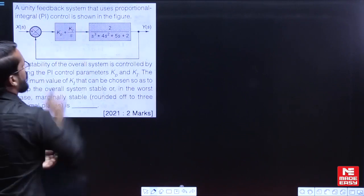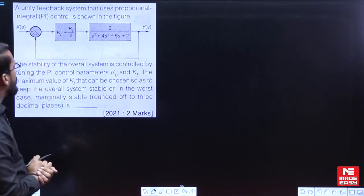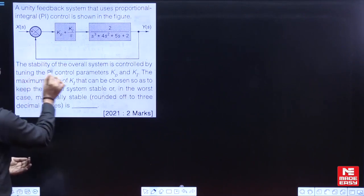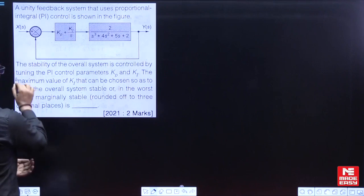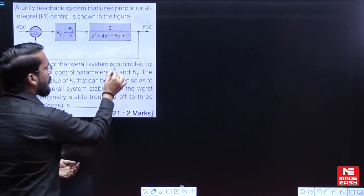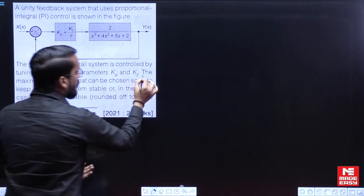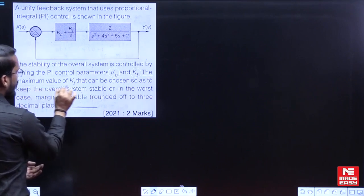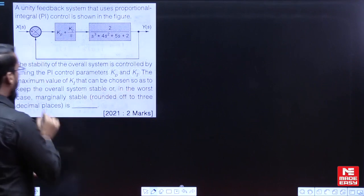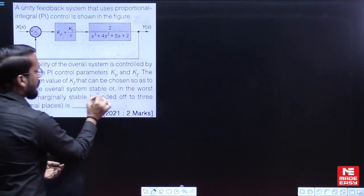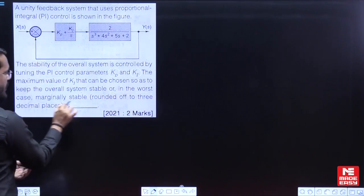A unity feedback system that uses proportional-integral control is shown in the figure. The stability of the overall system is controlled by tuning the PI controller parameters KP and KI. The maximum value of KI that can be chosen so as to keep the overall system stable, or in the worst case marginally stable, is to be found.